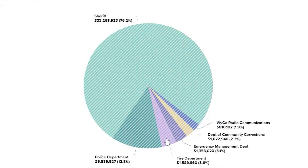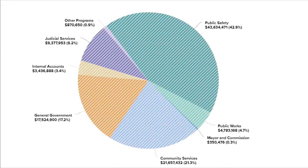3.6% goes to the fire communications division of the fire department, which handles 9-1-1 dispatch for the county. 4.7% of the county pie goes to public works, which maintains county buildings through buildings and logistics.